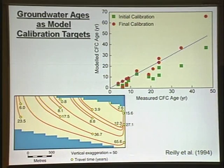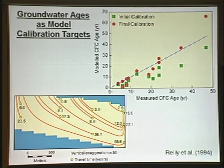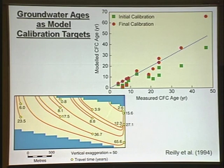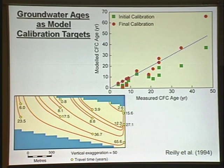If you then measure the age, that provides a useful check on your model or a way to recalibrate the model. Thomas Riley of the USGS was one of the first to do that. He asked his model — this is a transect through the aquifer — the yellow circles are the screens of the piezometers, and he dated the water at these piezometers. He compared the model age with the measured age; initially he saw it was off, then he recalibrated the model and improved the fit.